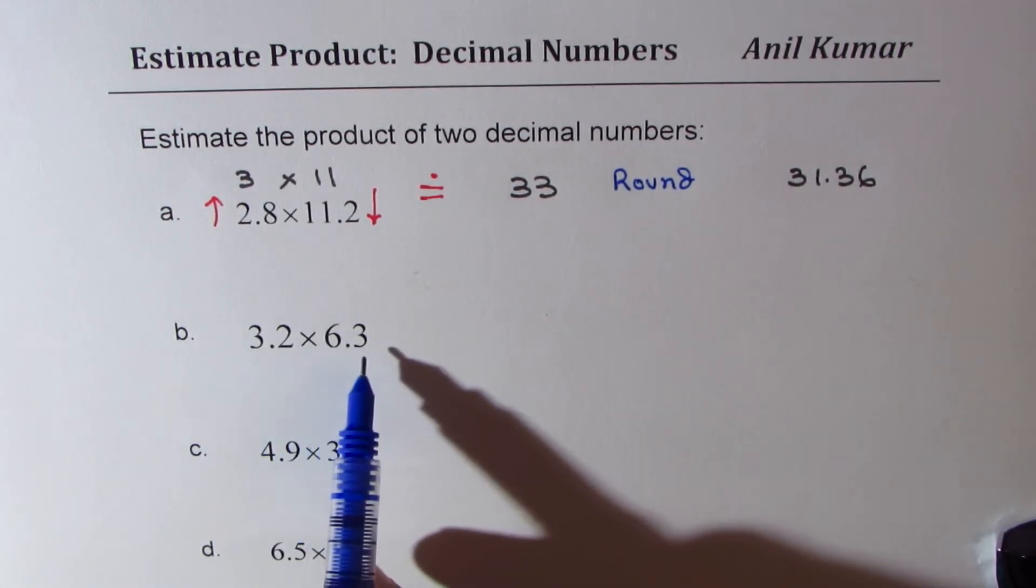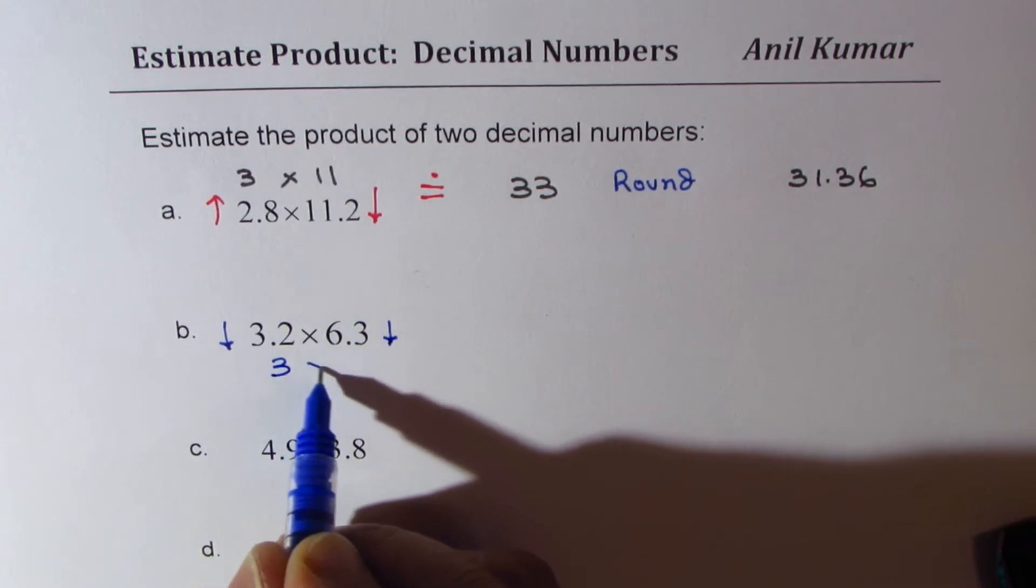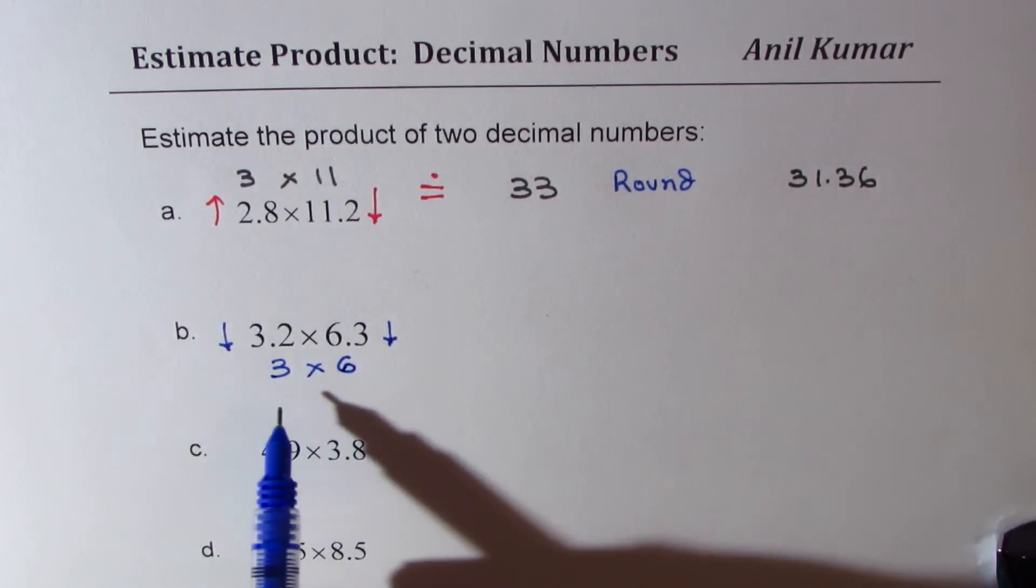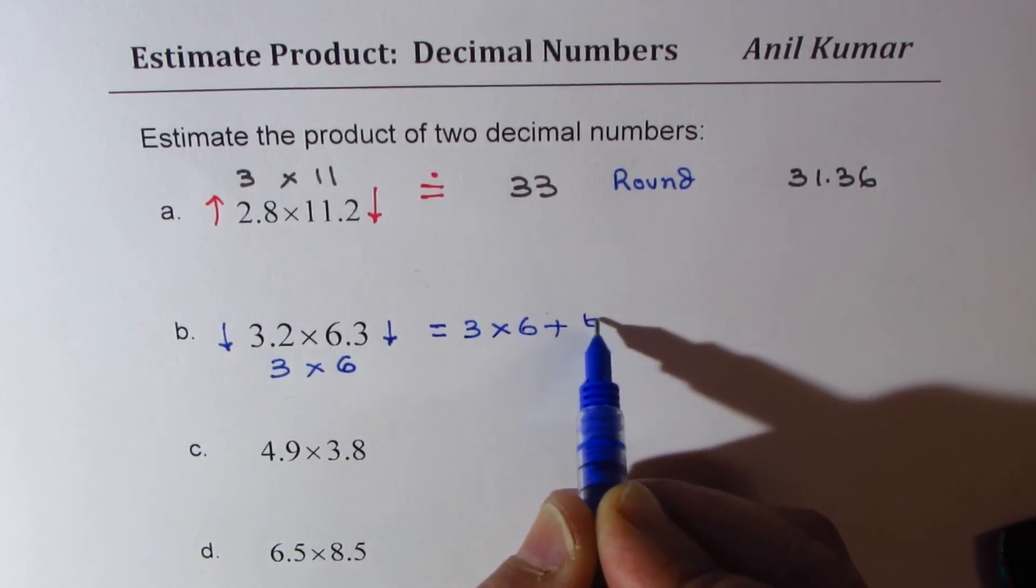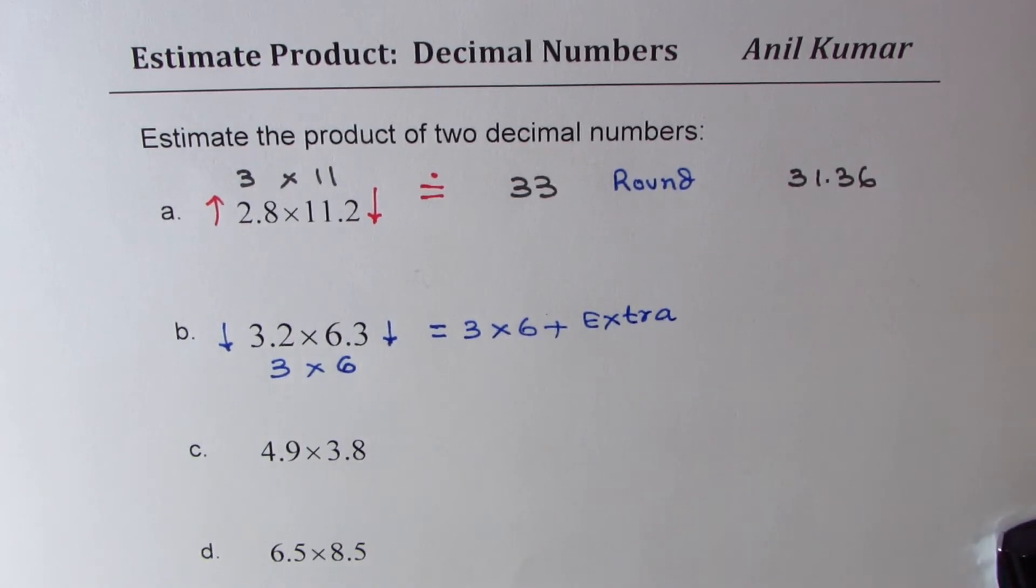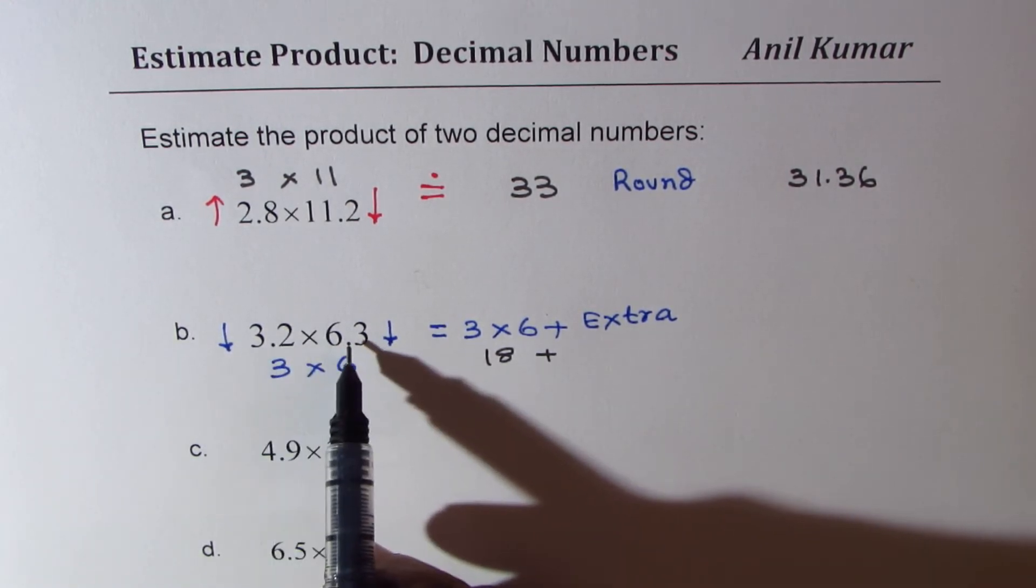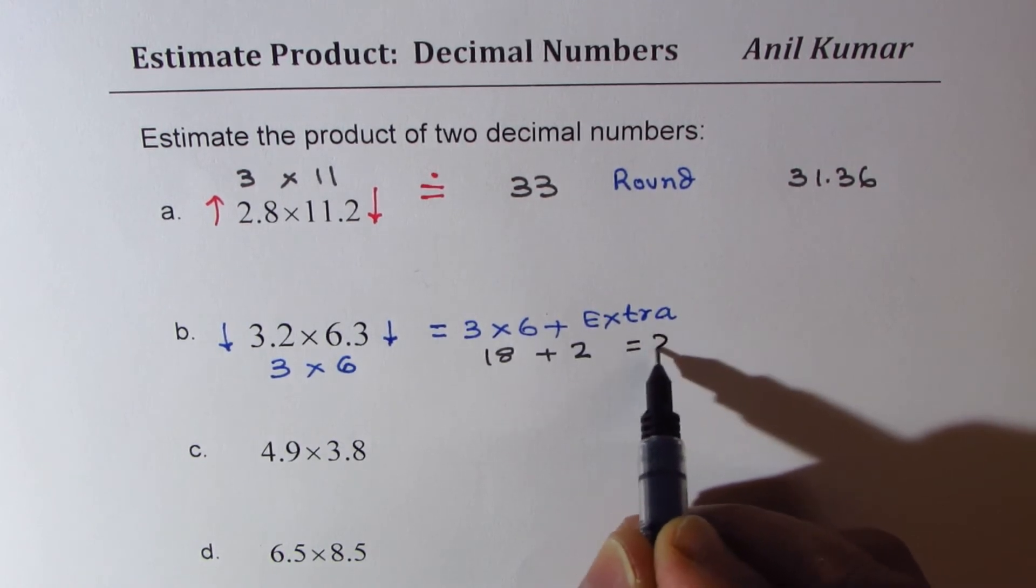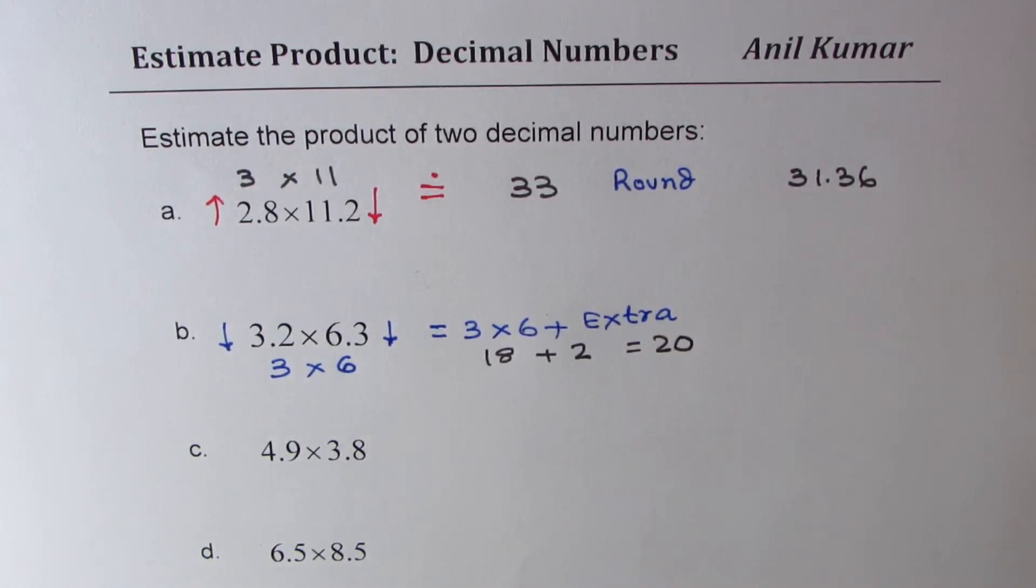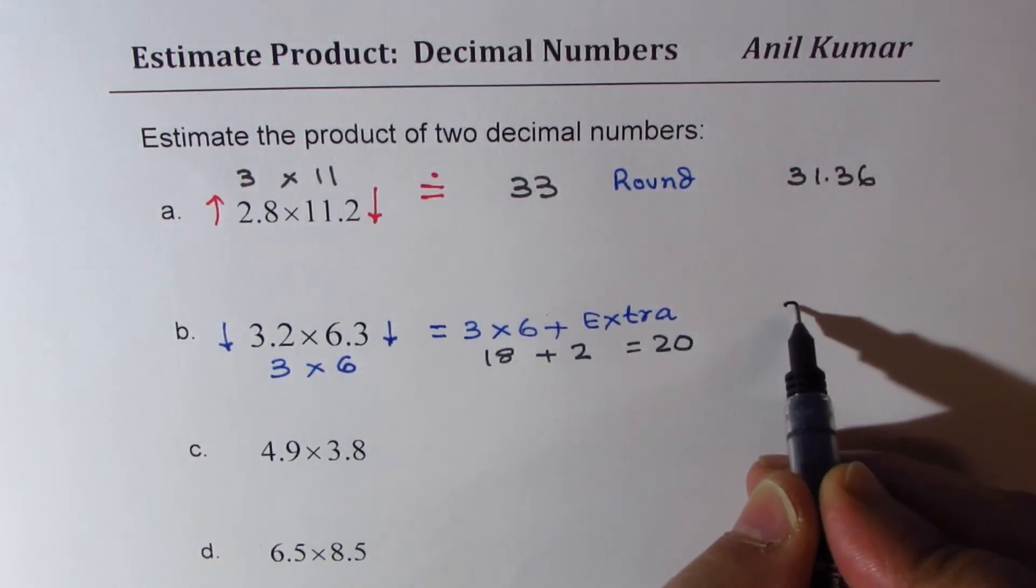Now next one, 3.2 and 6.3. Now in both, we have to round lower. 3.2 could be written as 3, 6.3 as 6. Now since we rounded both lower, we should add extra. So in this case, it should be 3 times 6 plus something extra. Now what should be that number? That is your judgment. So 18 plus something. Now that something, since these numbers are very small, we could say let this number be 2. So we'll estimate this to less than 20. Now let's check our estimate. We have 3.2 times 6.3 equals in decimals 20.16. So it's fairly close.